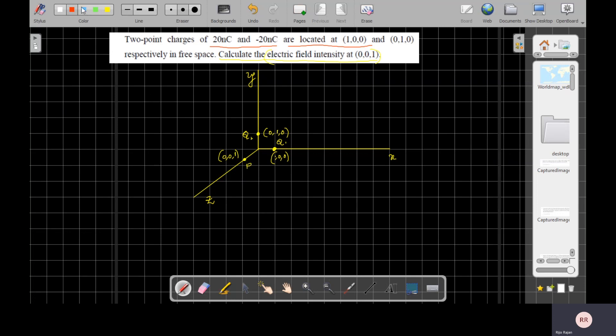You have to find what is the electric field intensity at this point. There are two charges, so what is the electric field E at P due to Q1 and what is E at P due to Q2?